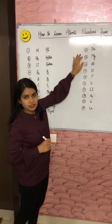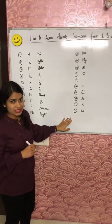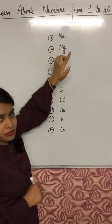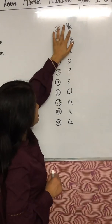Now we will learn the atomic numbers from 11 to 20. And what are these? Sodium. Latin name for sodium is natrium, so that is why it is Na, sodium.